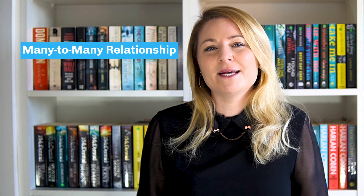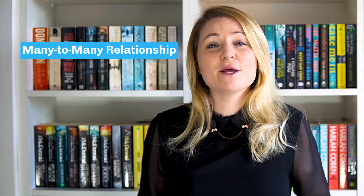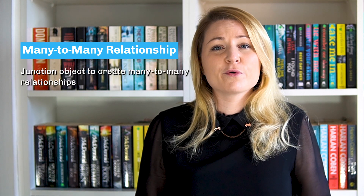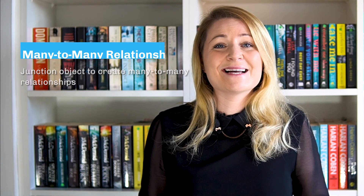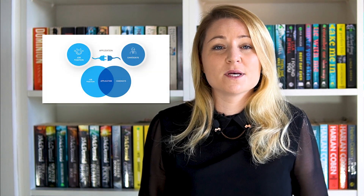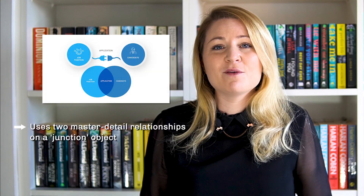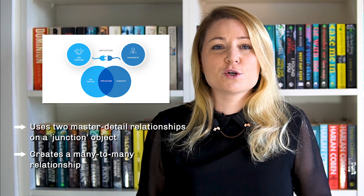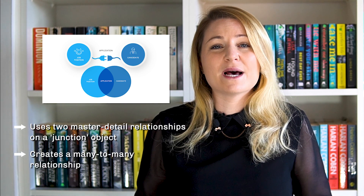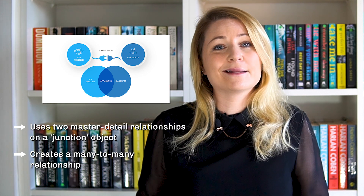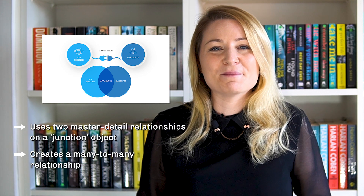Sometimes you need a many-to-many relationship, and this is where you need a junction object. For example, for recruitment, we can have jobs and candidates. Jobs can have multiple candidates, and candidates can apply to multiple jobs, so a one-to-many relationship does not work. We can create a custom junction object called applications, which will allow a job to have many candidates apply and candidates to apply to many jobs.